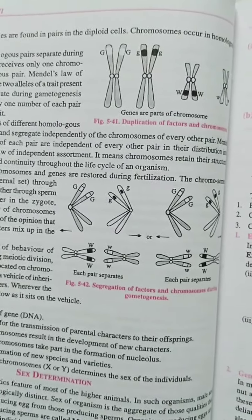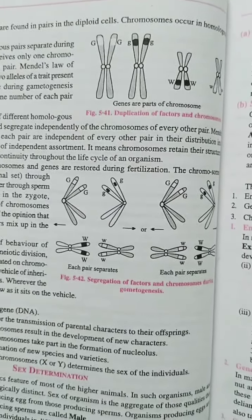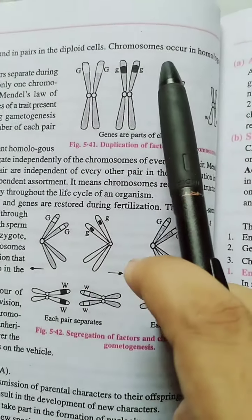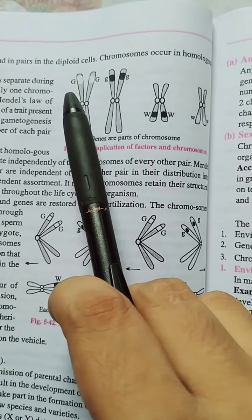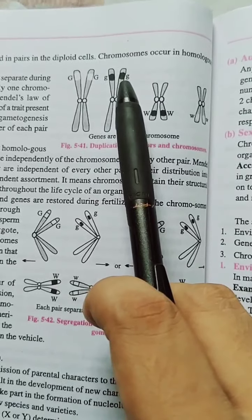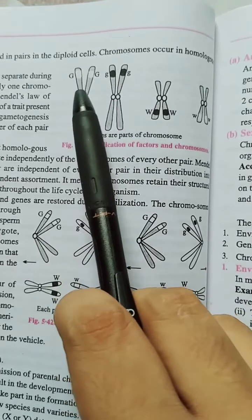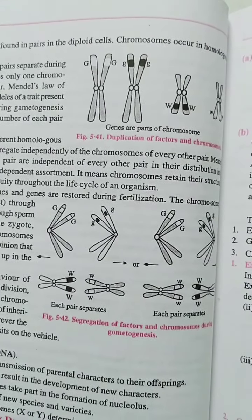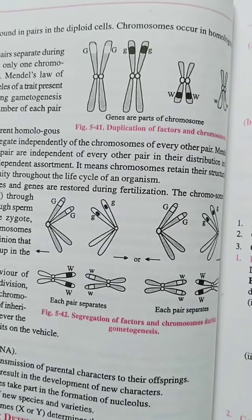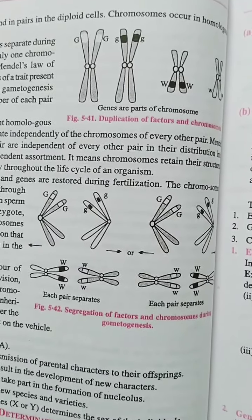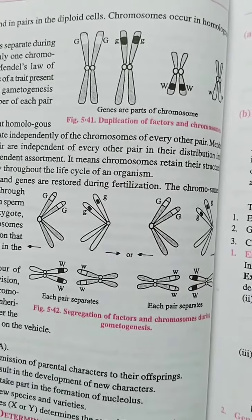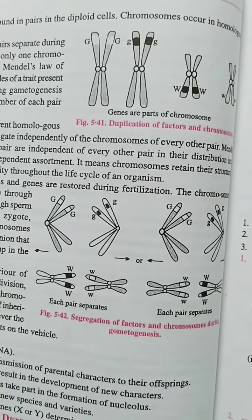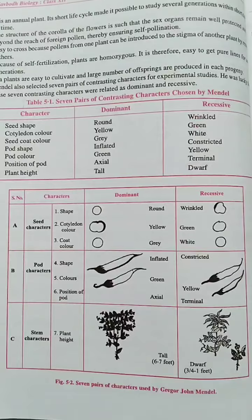These chromosomes carry alleles — we can define genes from alleles. Some of them could be dominant alleles, and some of them could be recessive alleles. Those alleles which can express their own characters are dominant alleles, and those which cannot express themselves or are generally masked by the dominant one will be known as recessive alleles.